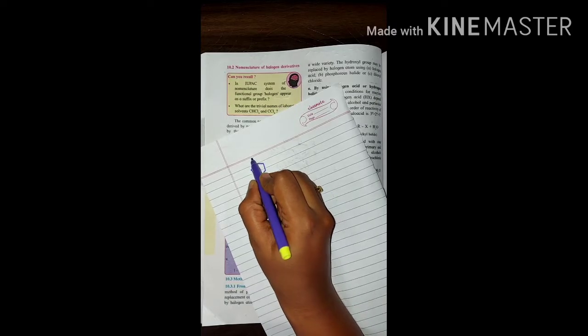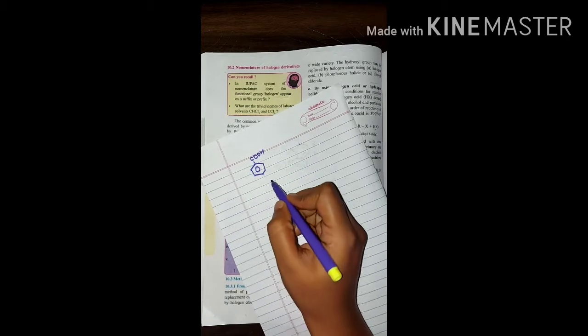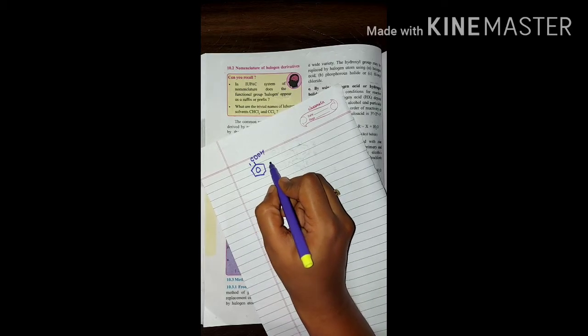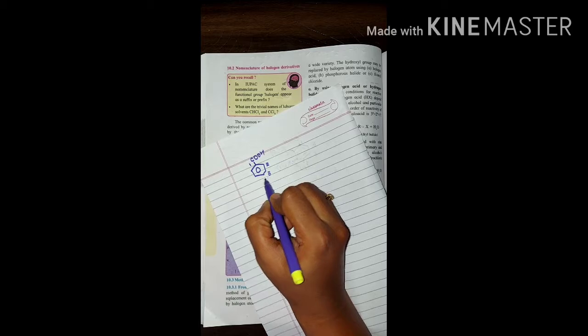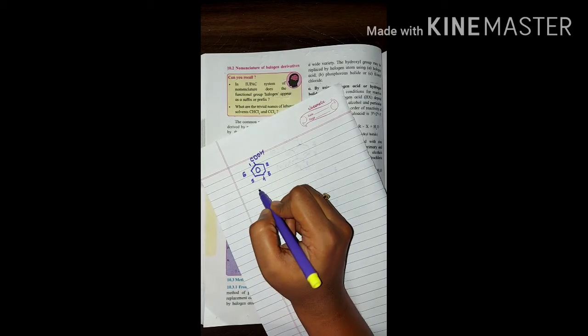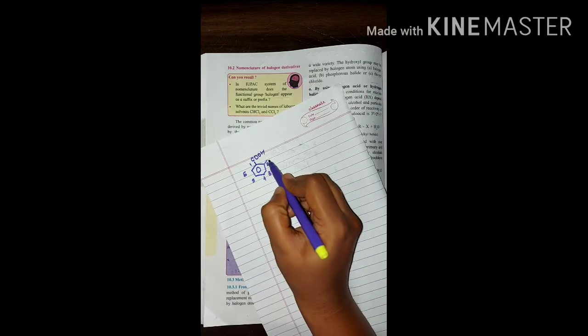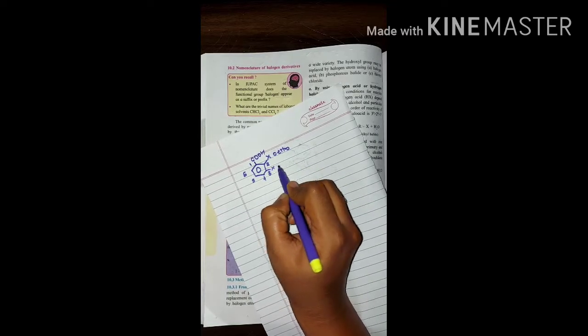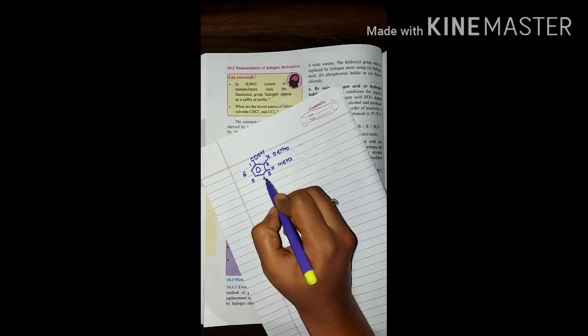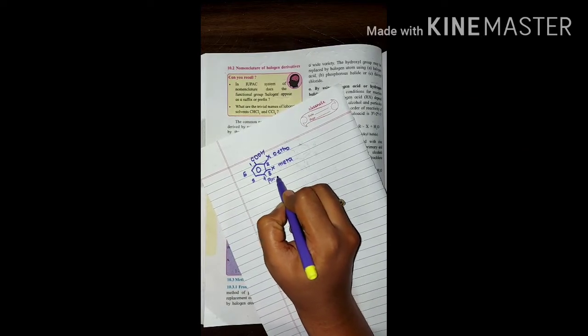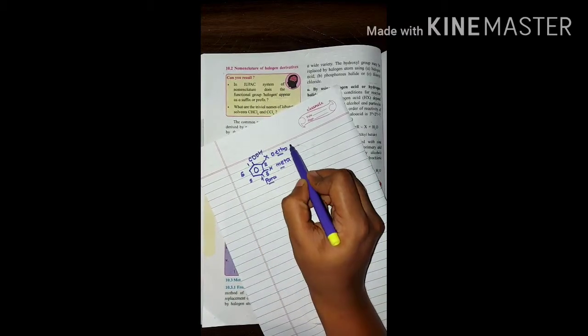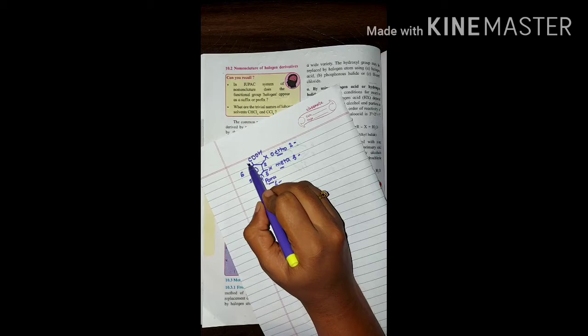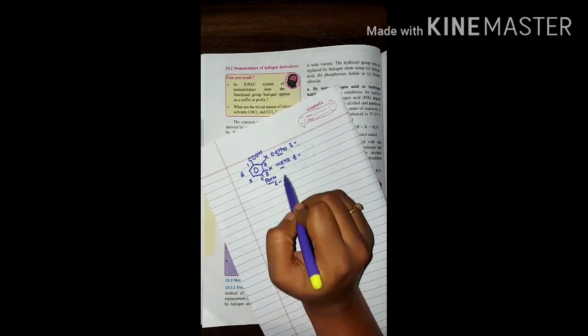In arene like benzene, assume a functional group is present. Where the functional group is attached, that position is decided as 1. Then we do numbering from there, either right side or clockwise. If halogen is at the second position, it's called ortho position. Third position is meta position. Fourth position is para.